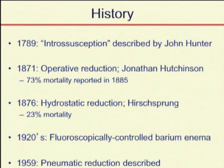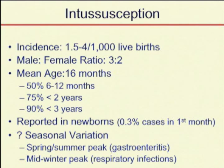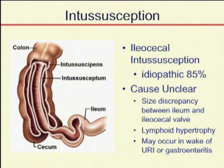It's relatively common with a slight male predominance. The mean age of presentation is 16 months, but 50% of cases happen in children under one year, 75% occur by the time children are two, and 90% occur in children three and under. That doesn't mean it doesn't happen in older children and adults, which I will touch on later in the talk.